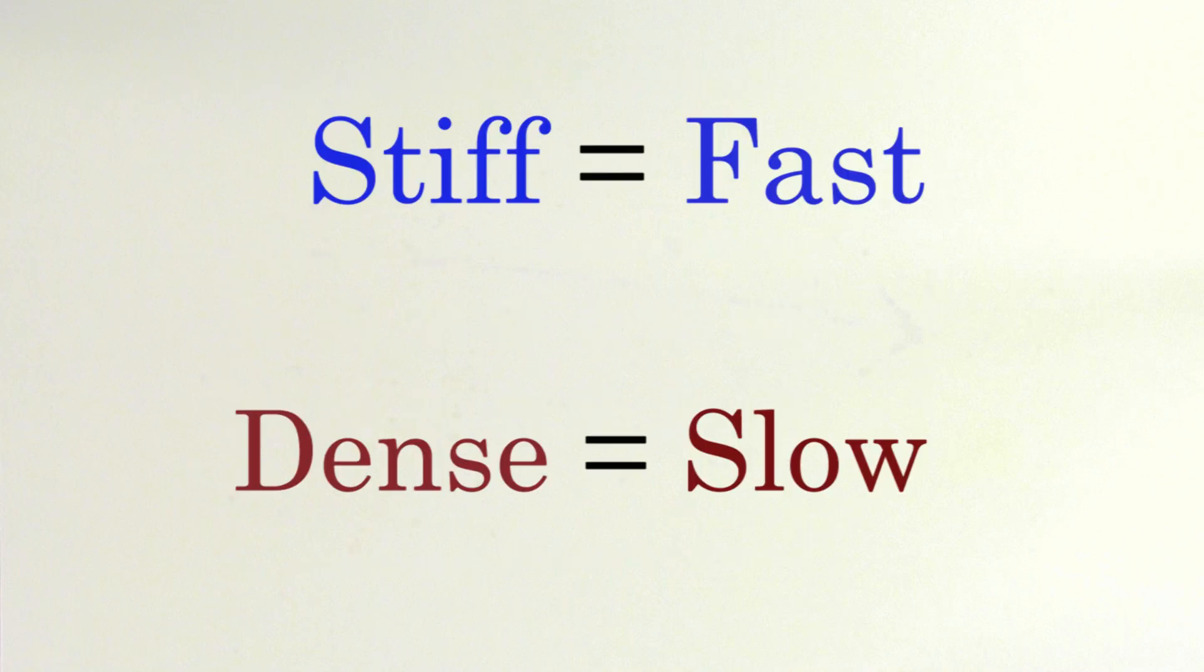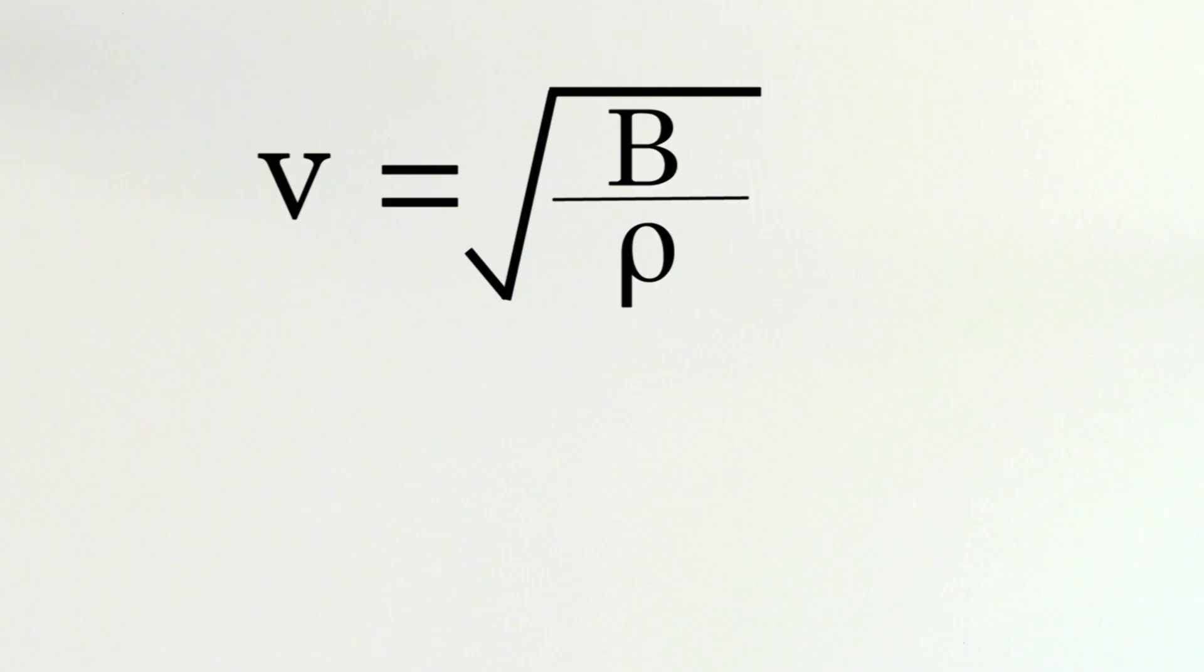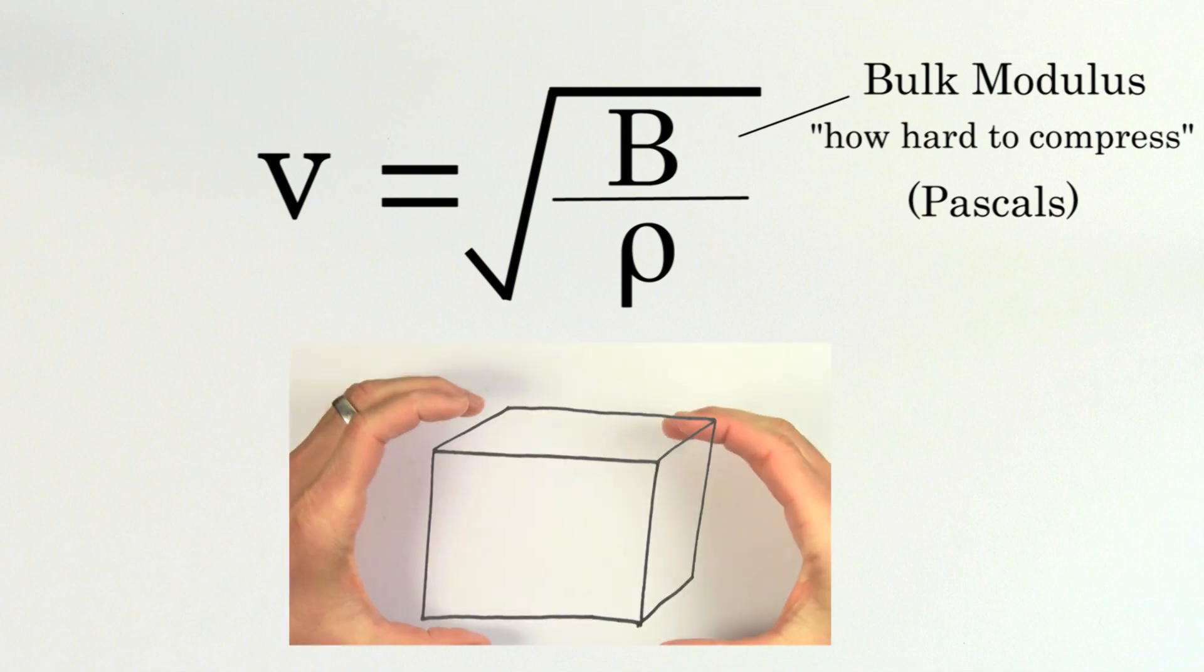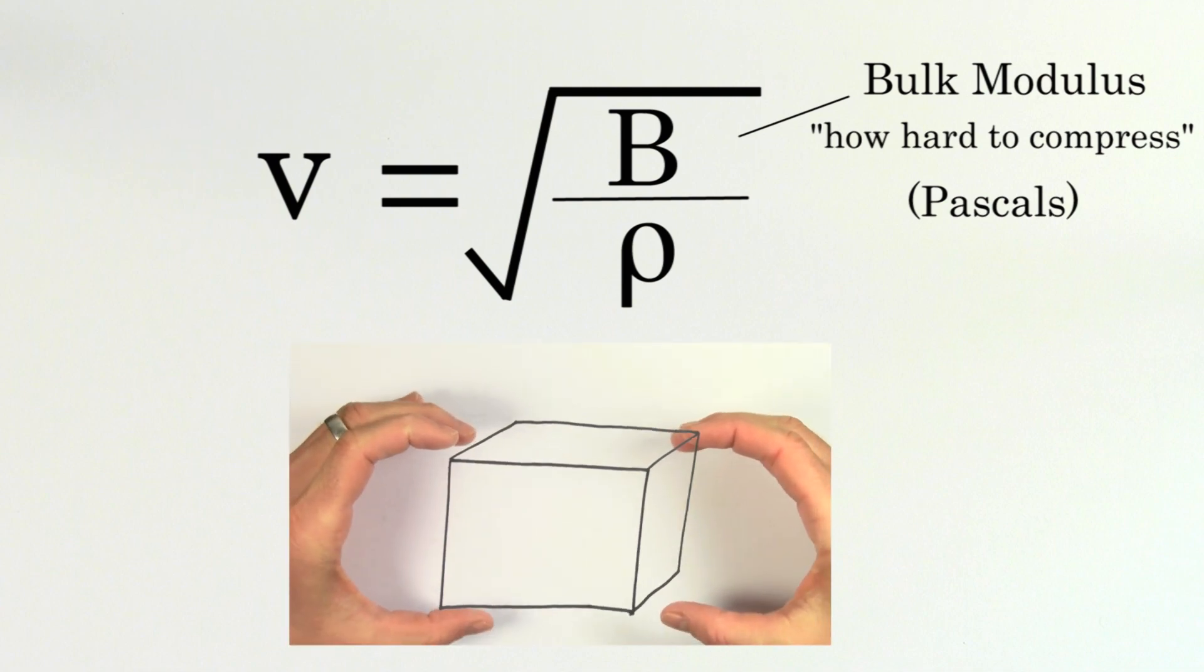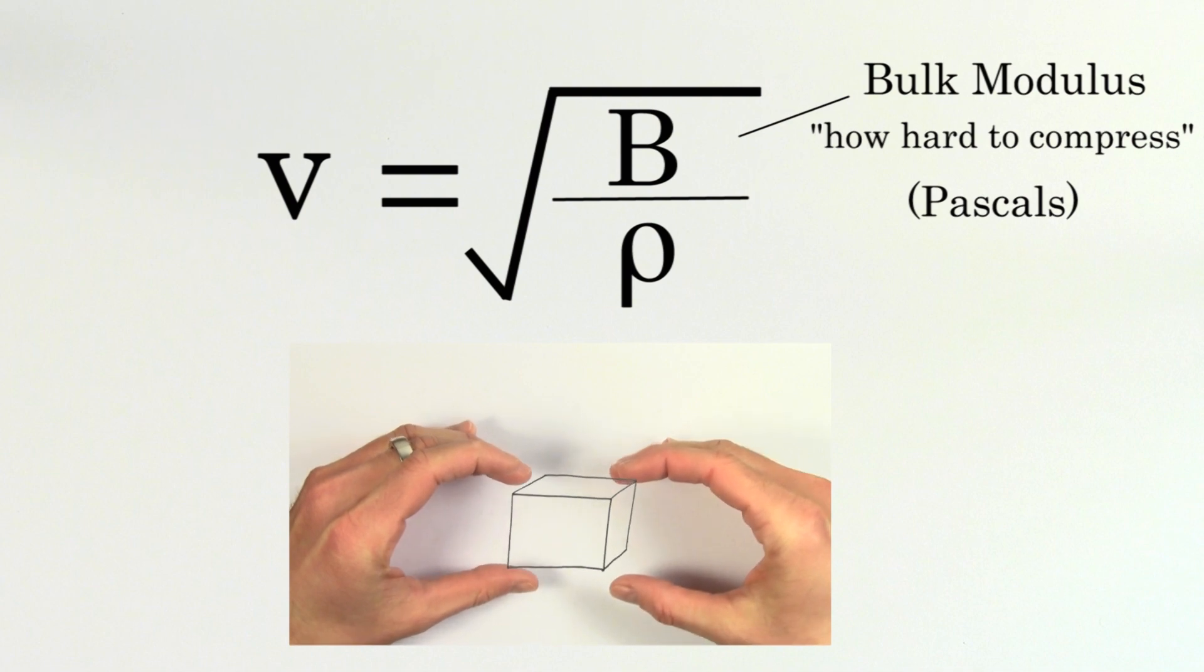These two factors are taken into account with this formula. V is the speed of sound. Capital B is called the bulk modulus of the material. The bulk modulus is the official way physicists measure how stiff a material is. The bulk modulus has units of pascals because it's measuring how much pressure is required to compress the material by a certain amount.